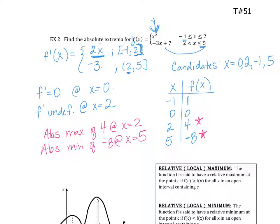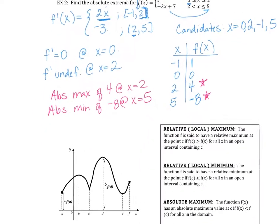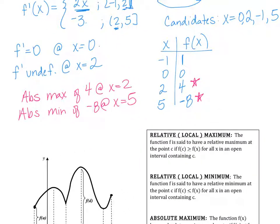Your absolute max can occur in more than one spot — if my graph went up to the same height at two different points, my absolute max would occur at two different x values. That's definitely a possibility in your answer. The absolute max or min could occur in more than one spot.